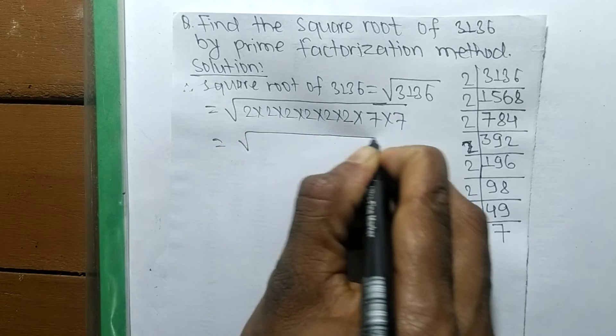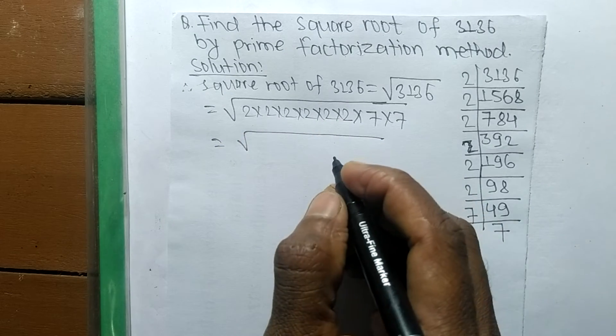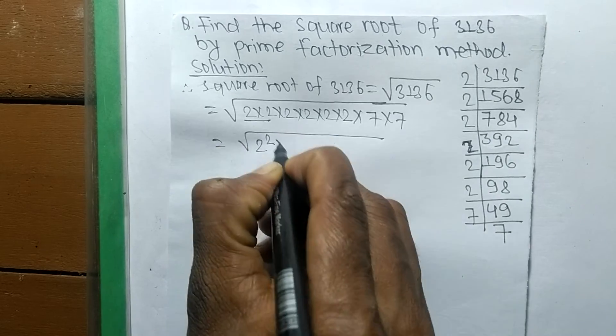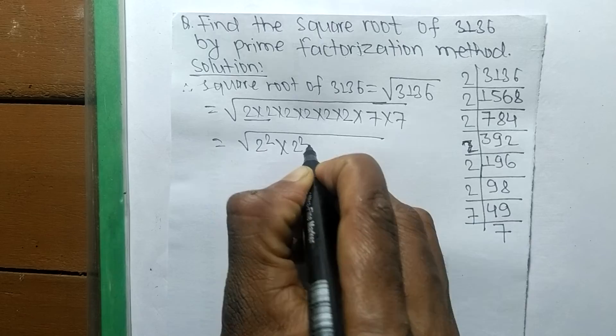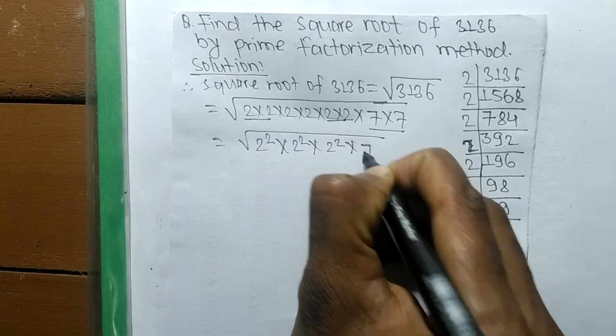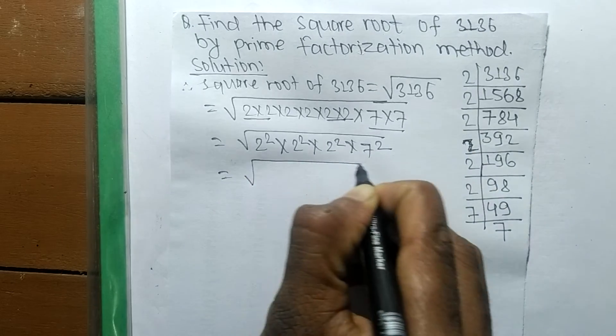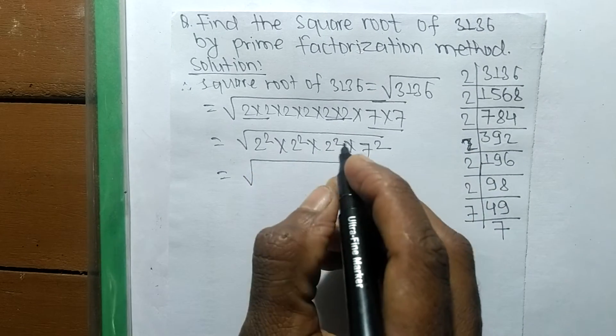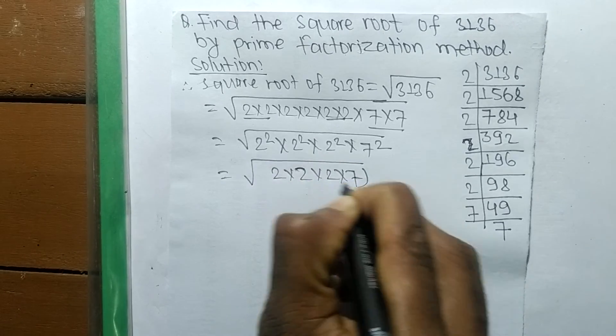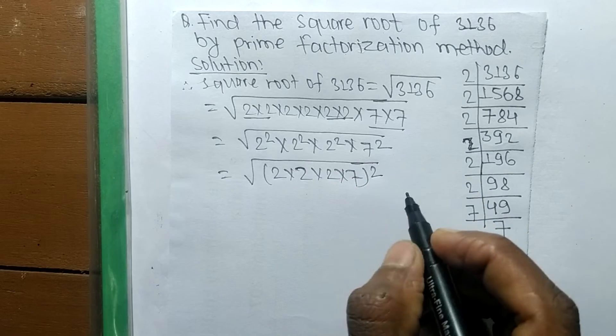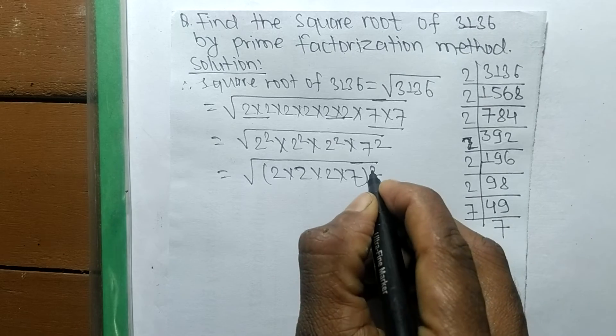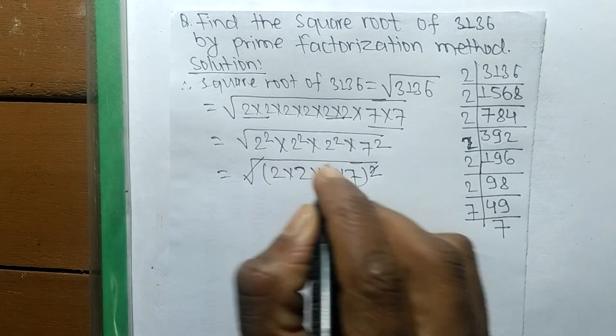After writing all the prime factors, now we make the square of the given prime factors. 2 into 2 is 2 squared, 2 into 2 is 2 squared, 2 into 2 is 2 squared, and 7 into 7 is 7 squared. So we make it 2 into 2 into 2 into 7 whole squared. Now the square and square root cancel each other.